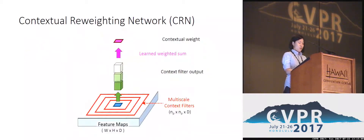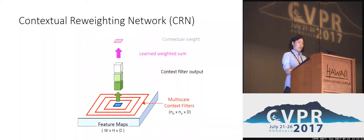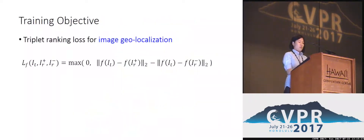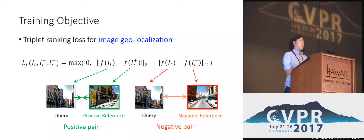The CRN produces the weight for a feature by combining multi-scale contextual information. Namely, it simply looks around surrounding features through what we call contextual filters, then the filter outputs are accumulated using learned weights. The network is optimized under triplet ranking loss, such that images depicting the same place are put close to each other, and images depicting different places are put farther apart in the embedding space.